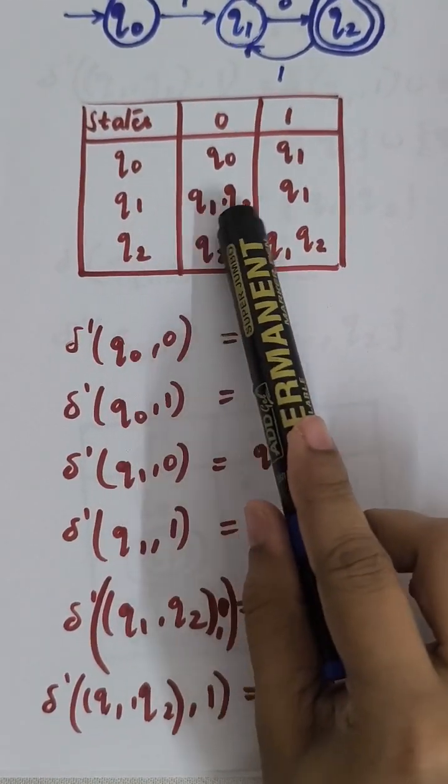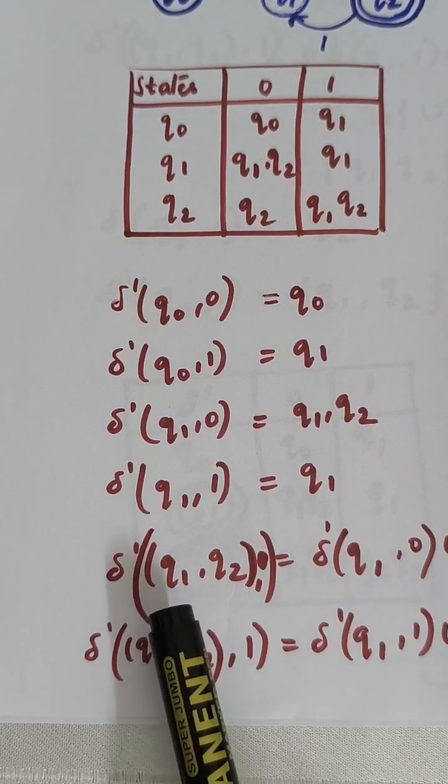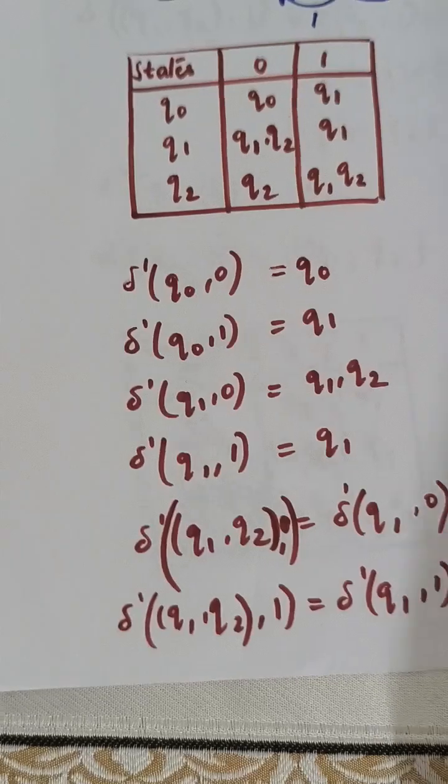We have got a new state in the transition table Q1 and Q2. So let us see how to elaborate this state Q1 and Q2 with transition on 0 and transition on 1.